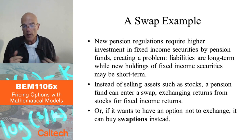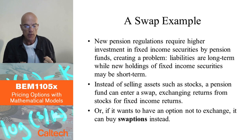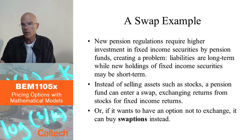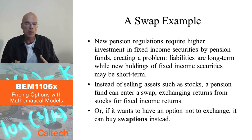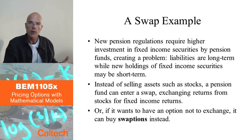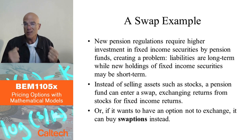If the regulations still allow it, instead of selling the stocks the pension fund owns, they could enter a swap in which they exchange profits or losses from stocks for fixed income returns. So effectively it's as if they are holding bonds or other fixed income instruments, but they're not really — they still hold the stocks, but they pay the profits or losses from stocks in exchange for returns from fixed income instruments. In this way, their returns reflect a higher percentage of fixed income instruments without actually selling the stocks.